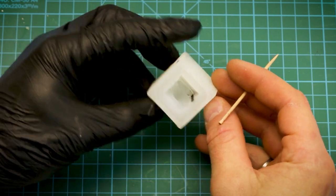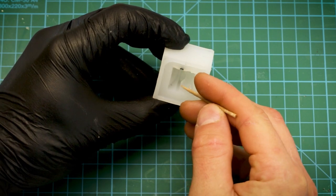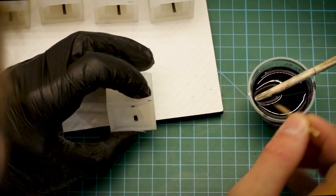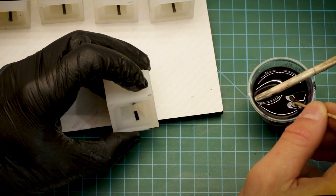Shot number two is the other side of the glasses, which we'll do exactly the same way as the first shot. Flip your mold over, drop in some resin, and let it cure.